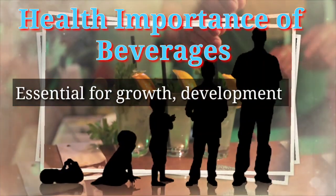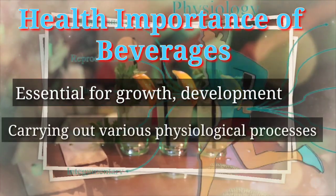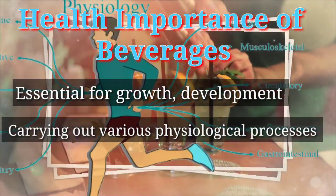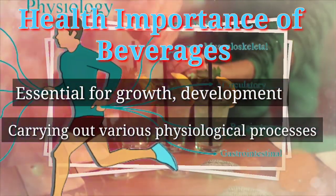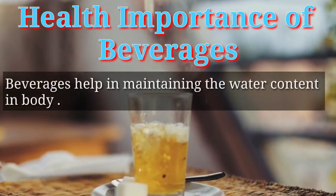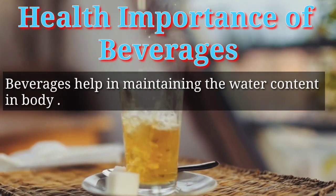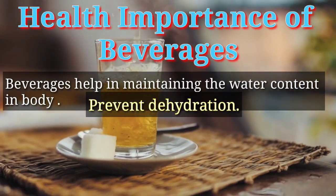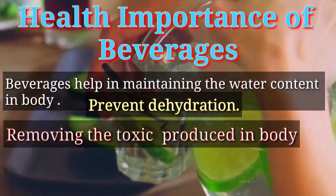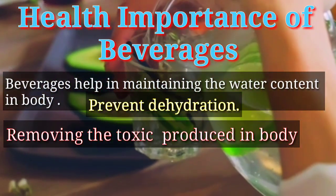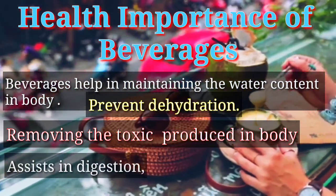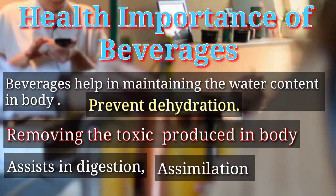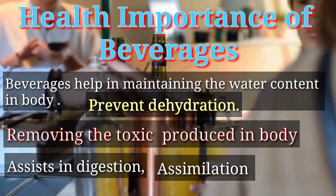Health importance of beverages: beverages are essential for growth and development, as well as for carrying out various physiological processes that are critical for living a healthy life. Beverages help in maintaining the water content in the body and prevent dehydration. They also help in removing toxic substances produced in the body as a result of metabolism, such as urea, uric acid, and ammonia, through the kidney.